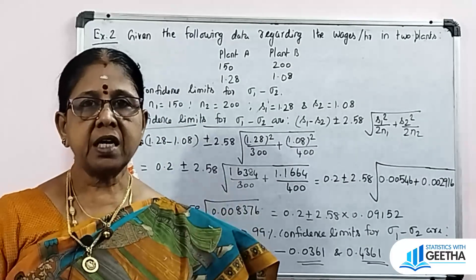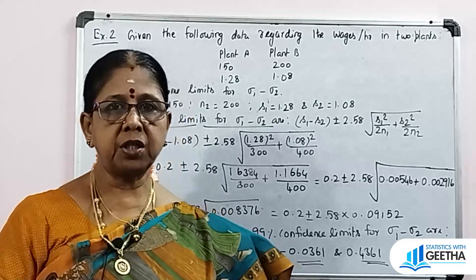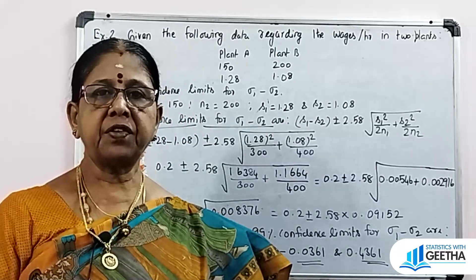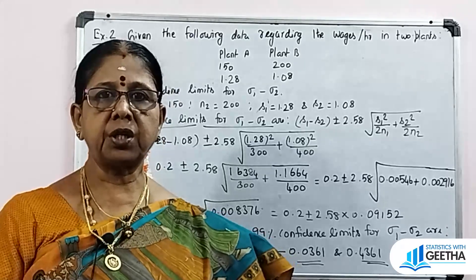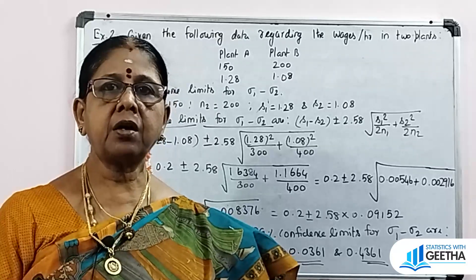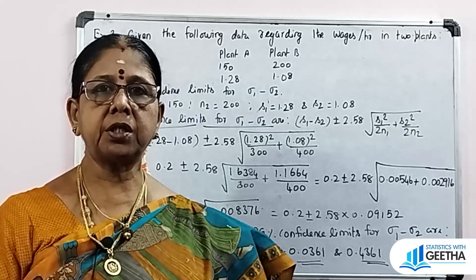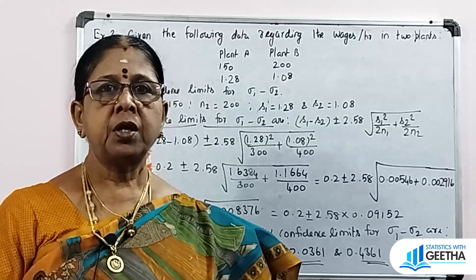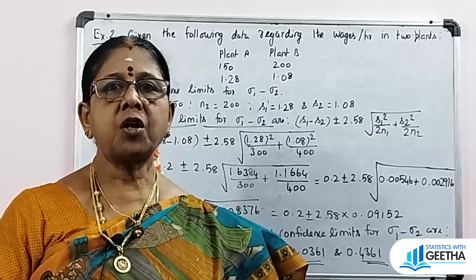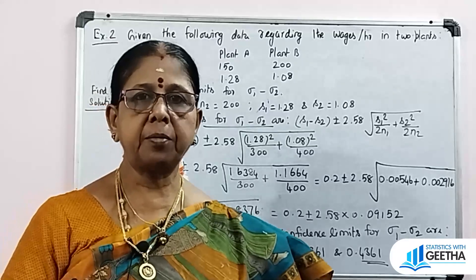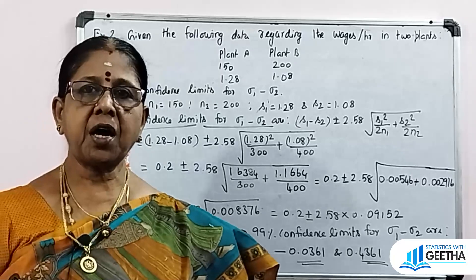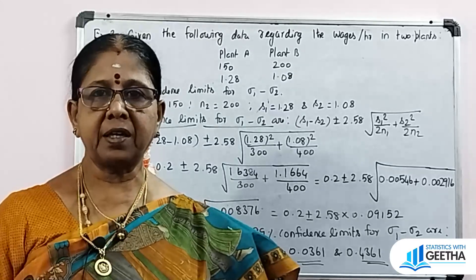To summarize: for small samples use T-distribution, for large samples (n greater than 30) use normal table values. Thank you for watching — please like, share, and subscribe.